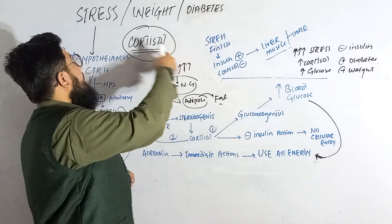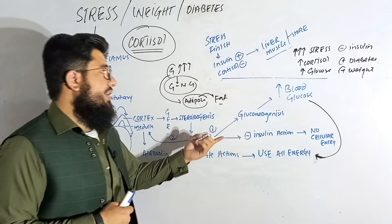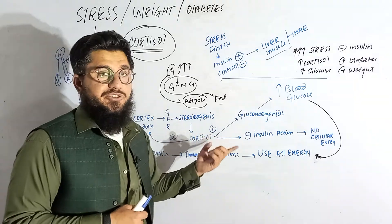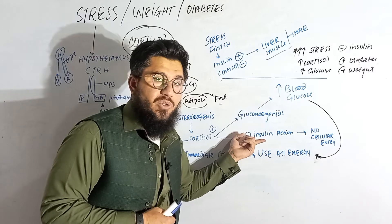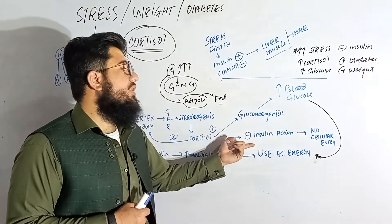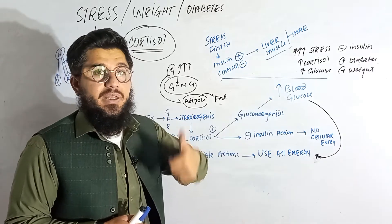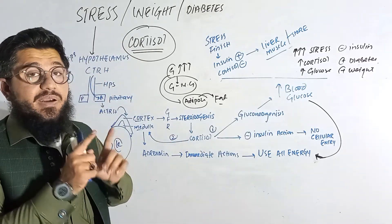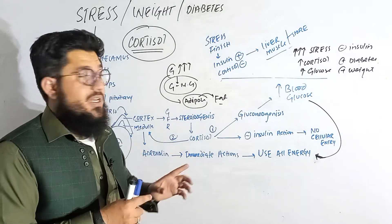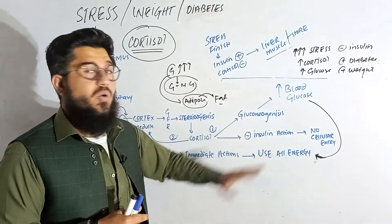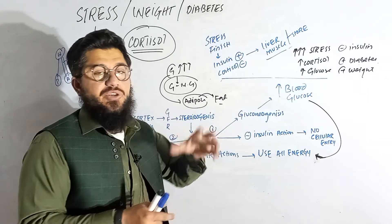Now, how is diabetes caused by stress? When stress increases, cortisol increases, causing gluconeogenesis and inhibition of insulin action. With no effective insulin action, blood glucose remains high. We know that high blood glucose is seen in diabetic patients — in type 2 diabetes, there is no effective insulin activity observed — so we then need medication to treat the disease.